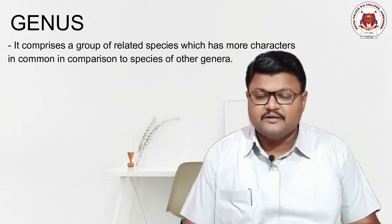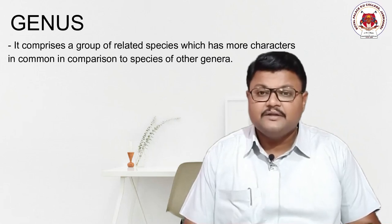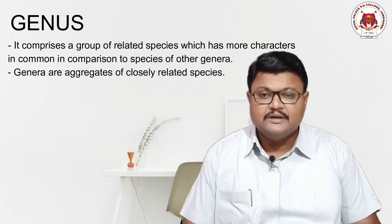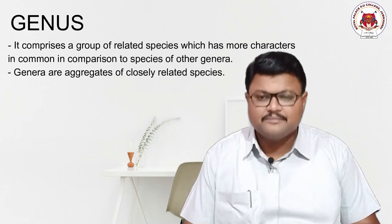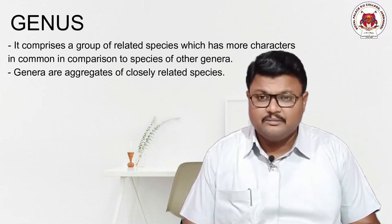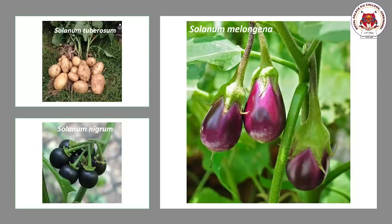The next taxonomical category is Genus, which is present above species. Genus contains more number of organisms than species but fewer common characters than species. Genus can be defined as a group of related or resembling species, or an aggregate of related species. For example, potato and brinjal belong to different species but share general characteristics, so both come under the genus Solanum.